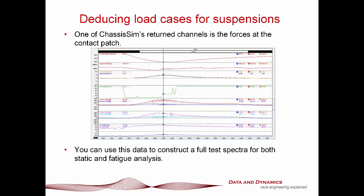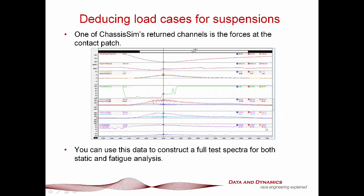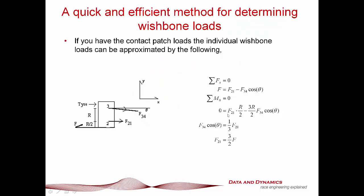ChassisSim returns the contact patch forces, so what's a quick and dirty way to get to the actual loads at the wishbones? If we take a look at a typical free body diagram of the hub, you've got your contact patch force, your lower wishbone force F2-1, and your upper wishbone force F3-4. Going through the force analysis, you'll find that your upper force is about half the contact patch and your lower force is one and a half times the contact patch. That will vary depending on geometry, but that's a really quick and dirty way — if you've got these lateral contact patch forces through the lap, you can resolve these into the individual wishbone loads and start getting hard structural numbers for what to expect from the car.